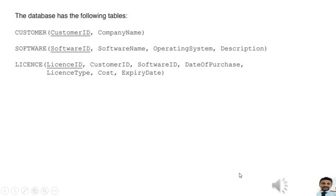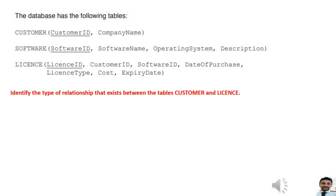Today I am going to discuss some database questions. Look at the first one — the database has the following tables: customer, software, and license. The first question is to identify the type of relationship that exists between the tables customer and license. It is one-to-many. To find that, look at the customer and license tables — you can see customer ID is repeating as a foreign key in the license table.